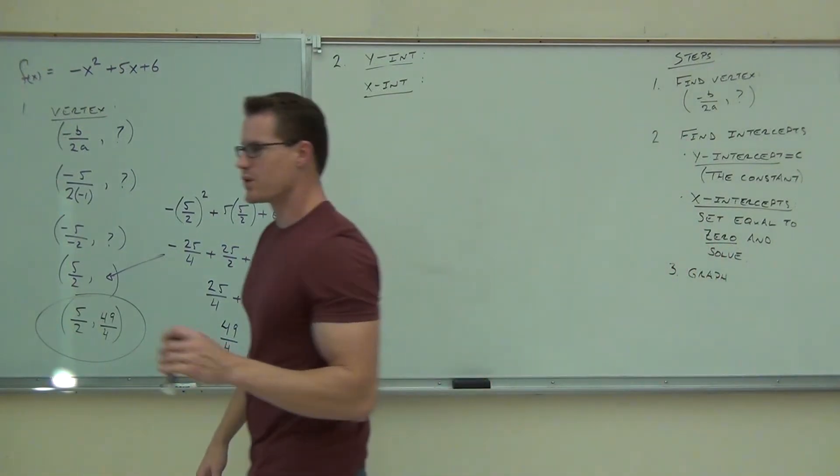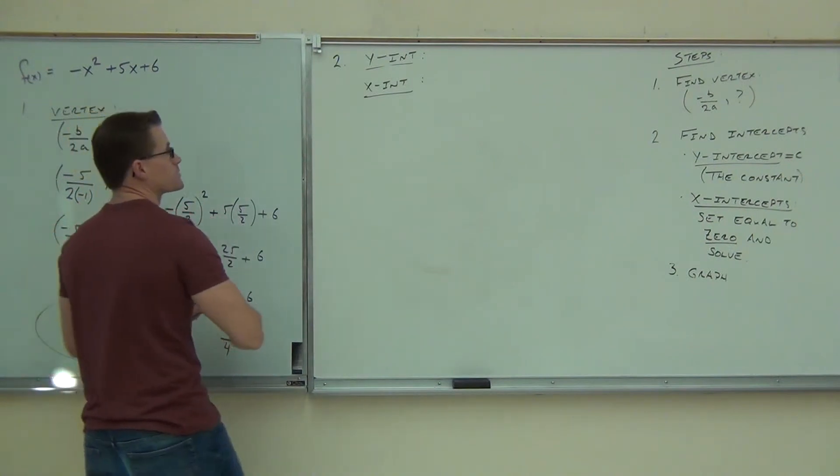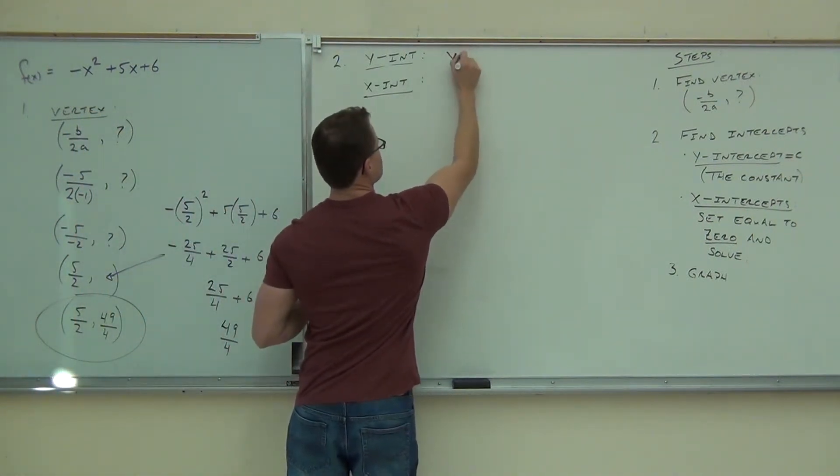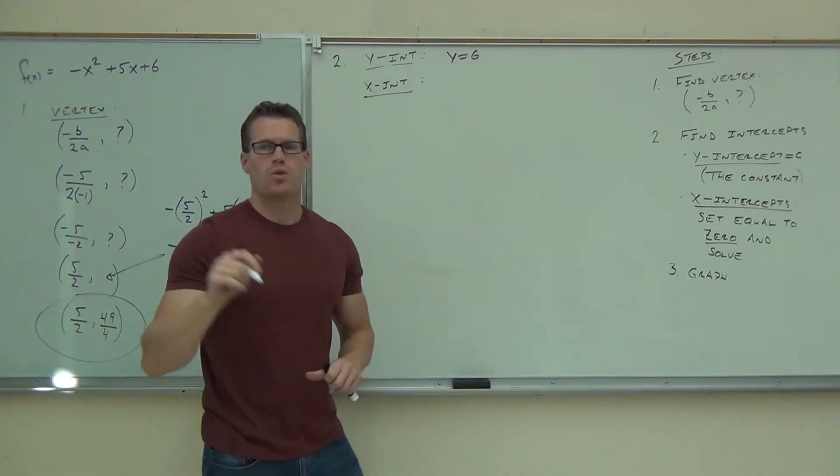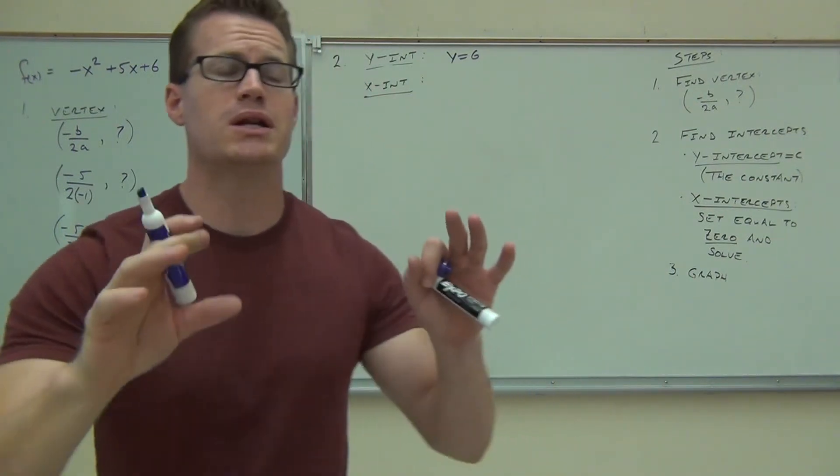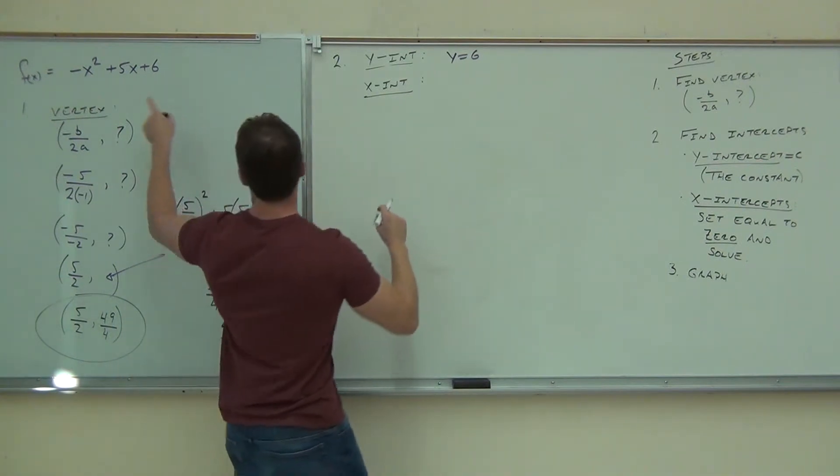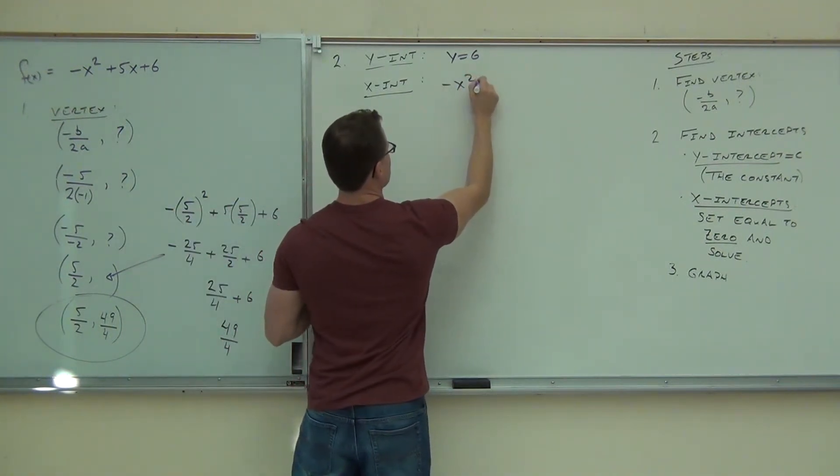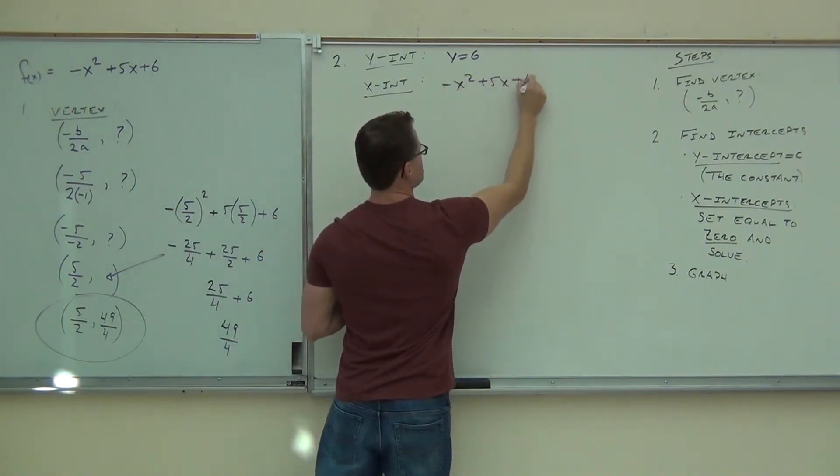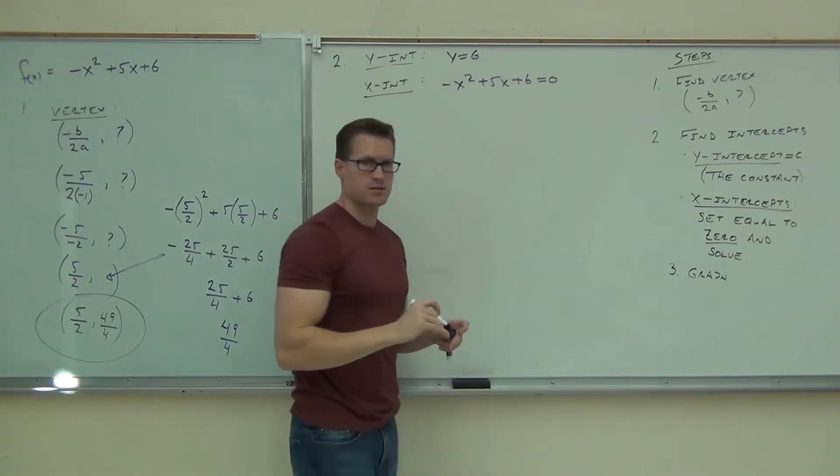Go ahead and find your y-intercept for me real quick. What is your y-intercept, please? Six. Y equals six. Great. X-intercept. Now, here's the trick, but here's what you can do with this problem. Check it out. Please, everyone's eyes should be on the board right now. When you do this problem, you're going to have negative x squared plus 5x plus 6 equals zero. Yes?